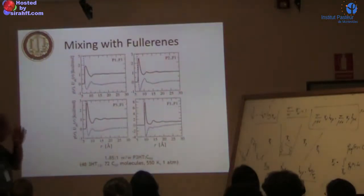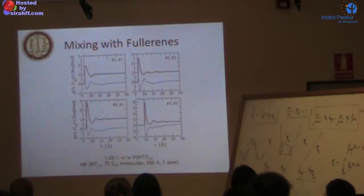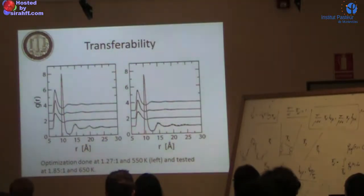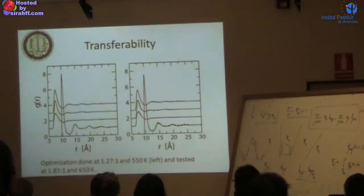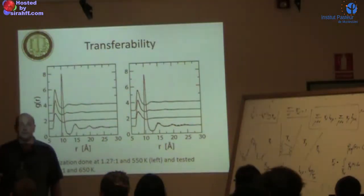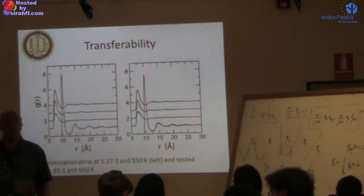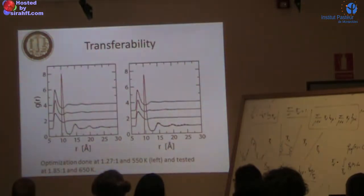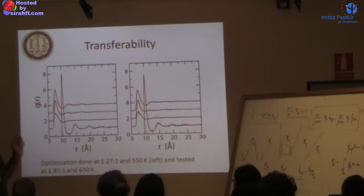After that we put fullerenes in there, a 1.85 to 1 weight-to-weight ratio, which is an experimentally relevant one, and got this as well. We did the optimization at 1.85 to 1 and 550K. Then we did tests at 1.27 to 1 and 550K - different concentration, same temperature. We got that one right. This one is the same concentration but different temperature, 450K. In both cases we got it dead on. That means the transferability of these models is given in the concentration and temperature range we need. As I said in yesterday's talk, you always have to check this, and that's what we checked here.